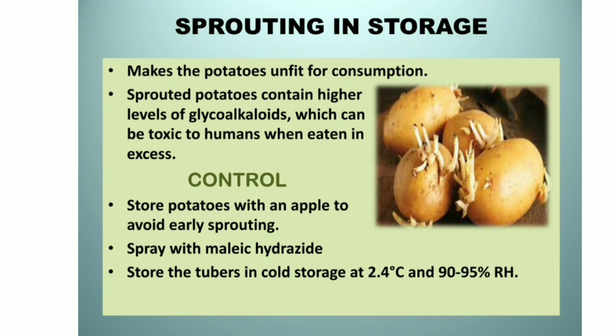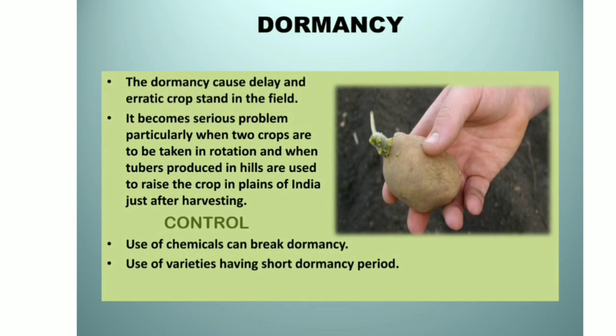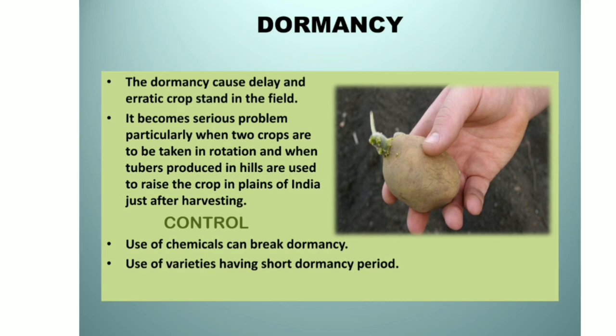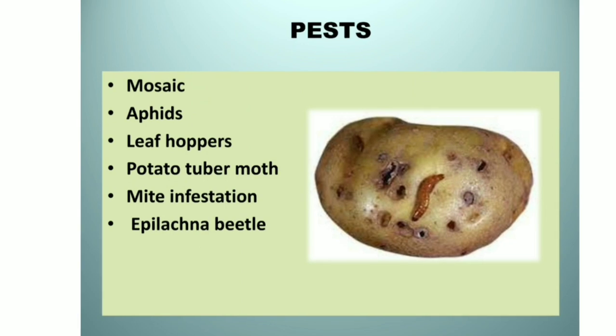Sprouting in storage makes the potatoes unfit for consumption. Sprouted potatoes contain higher levels of glycoalkaloids, which can be toxic to humans when eaten in excess. To control this, store the potatoes with an apple to avoid early sprouting, spray with maleic hydrazide, or store the tubers in cold storage at 2.4°C and 90 to 95% relative humidity. Dormancy causes delay and uneven crop stand in the field. It becomes a serious problem particularly when two crops are taken in rotation and when tubers produced in hills are used to raise the crop in plains. To control this, use chemicals that break dormancy and select varieties with shorter dormancy periods.